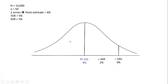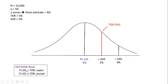Going back to the example: our tolerable deviation rate is 5%, which falls below the upper deviation limit of 6%. The decision rule states that if the upper deviation limit is greater than the tolerable deviation rate, we reject. In this case our conclusion is that the controls are not effective — we think the error rate could be as high as 6%, but we can only tolerate up to 5%, so we reject the controls.